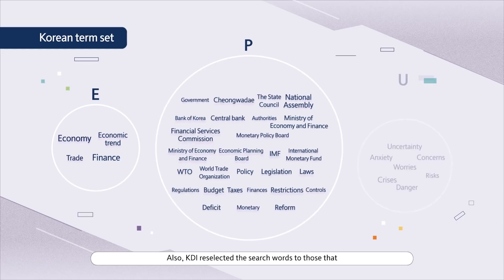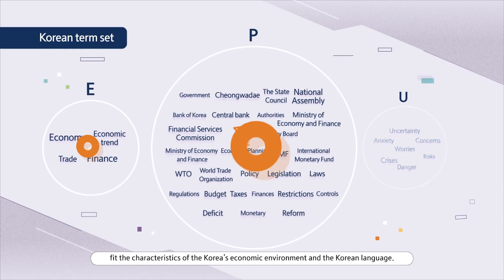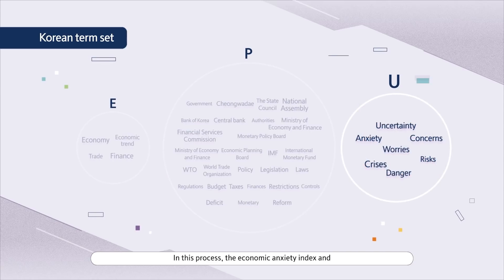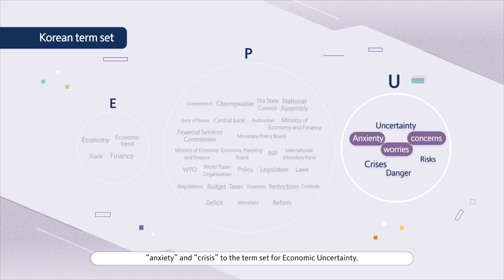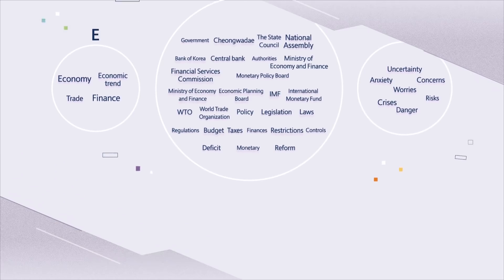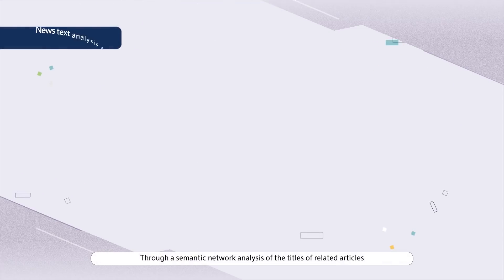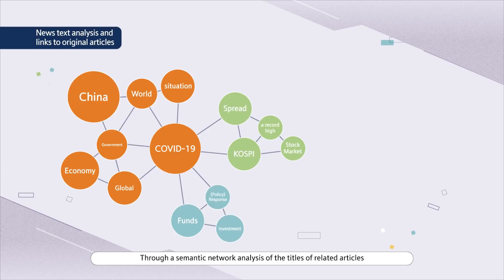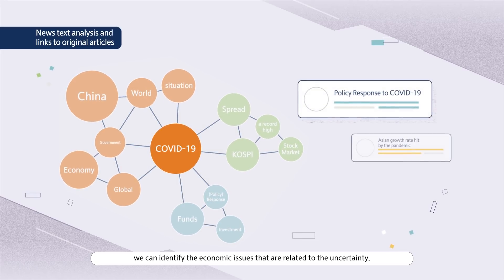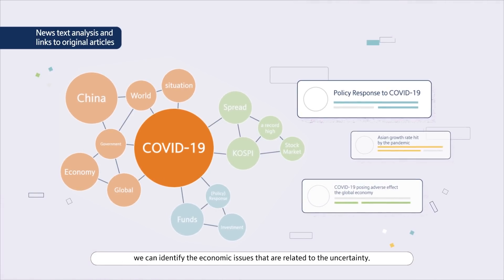Number three, KDI reselected the search words to those that fit the characteristics of Korea's economic environment and the Korean language. In this process, the Economic Anxiety Index and Economic Crisis Index were additionally calculated by adding words such as anxiety and crisis to the term set for economic uncertainty. Number four, through a semantic network analysis of the titles of related articles and links to the original articles, we can identify the economic issues that are related to the uncertainty.